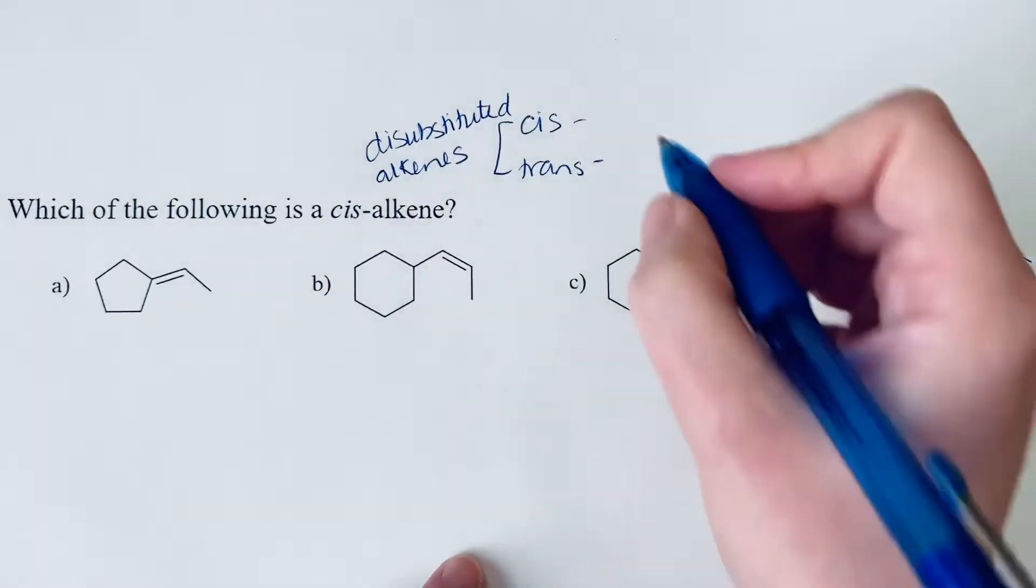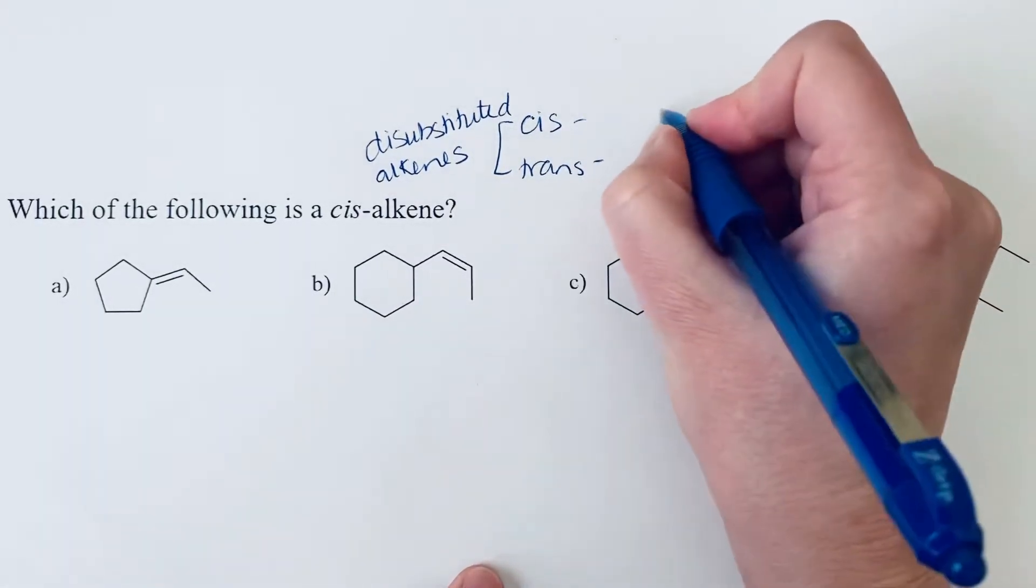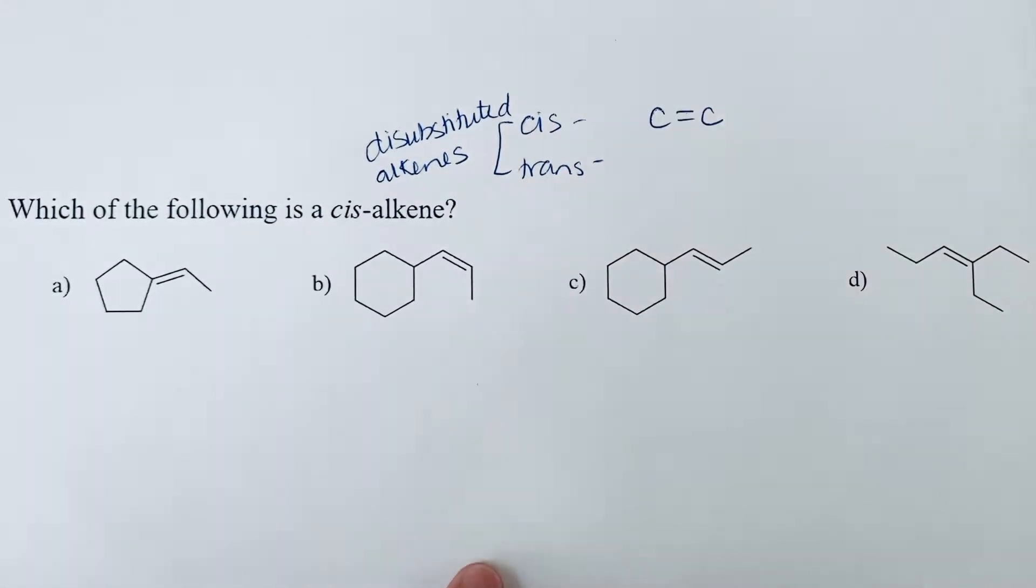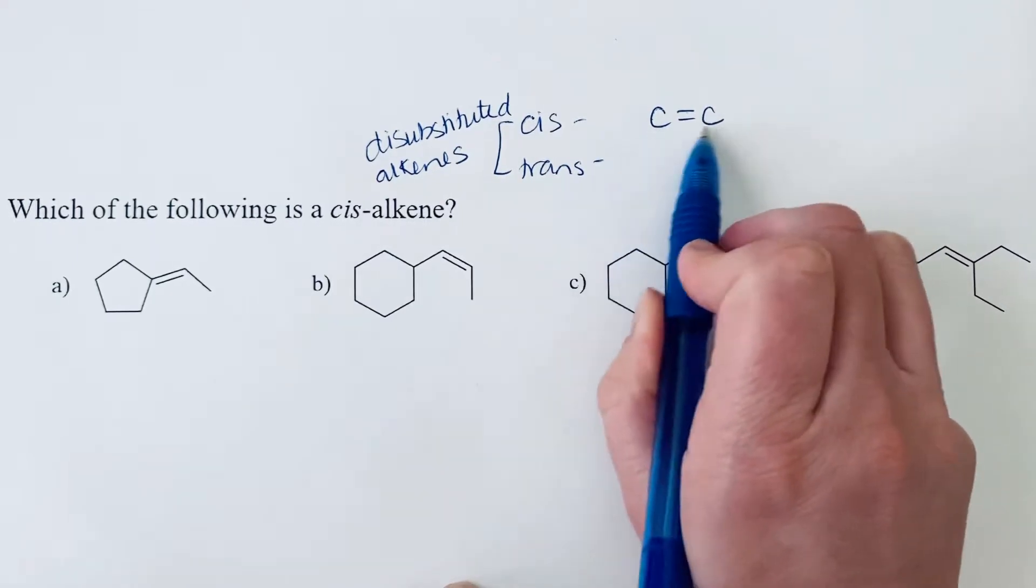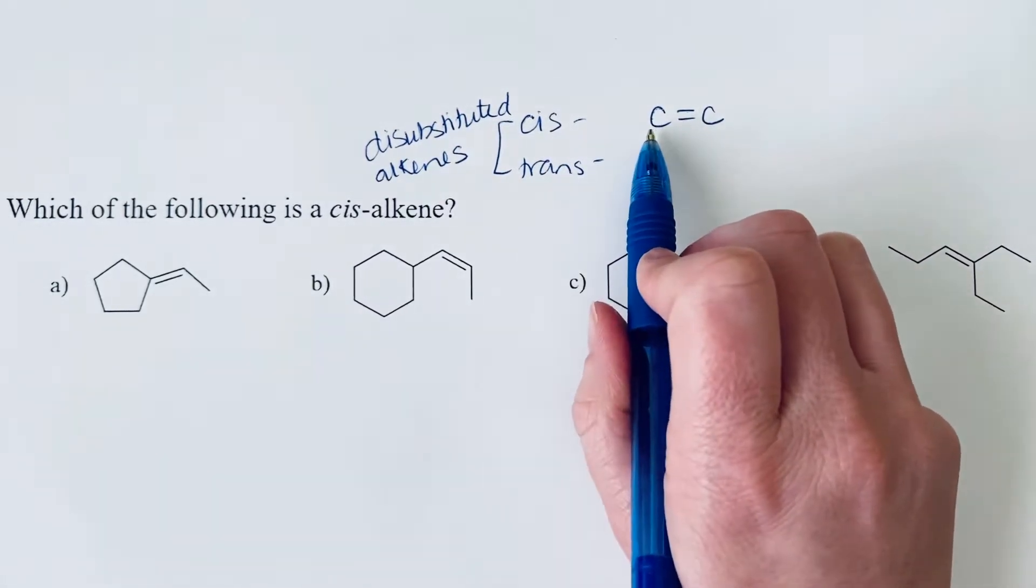And so here's what we're looking for. You're comparing the hydrogens on those alkenes. So a disubstituted alkene means that off of these two carbon atoms, you have to have a hydrogen.